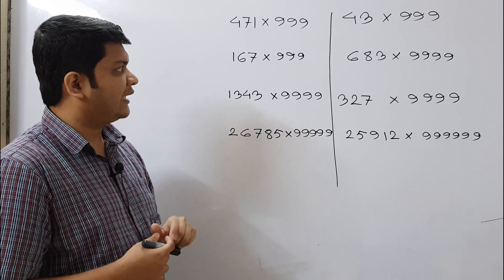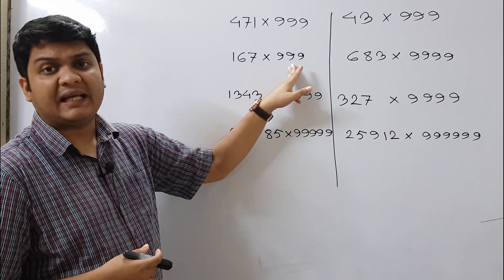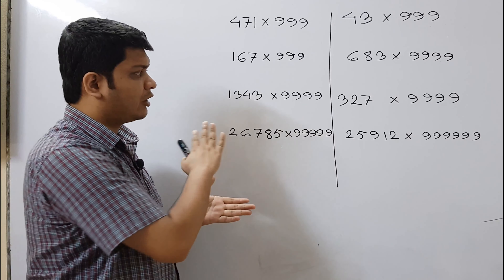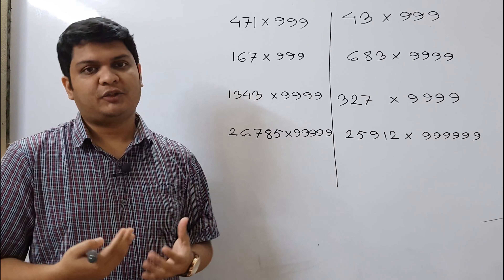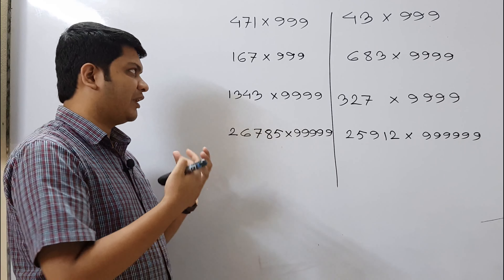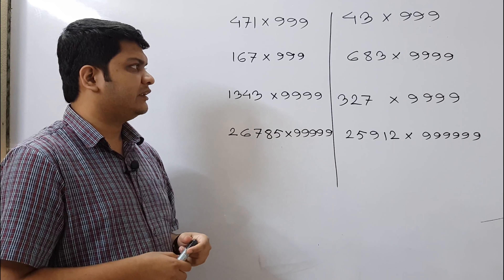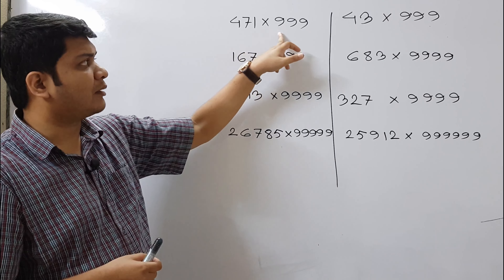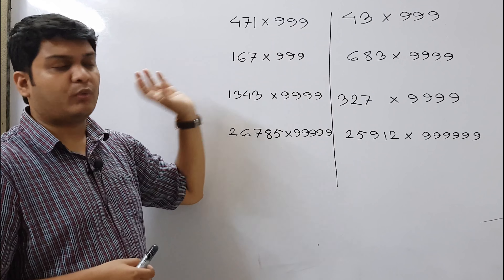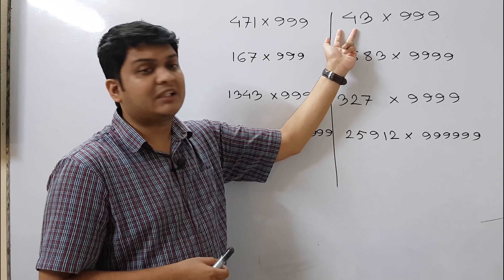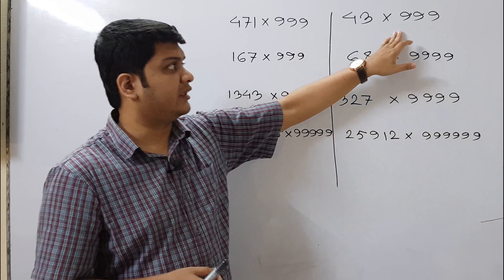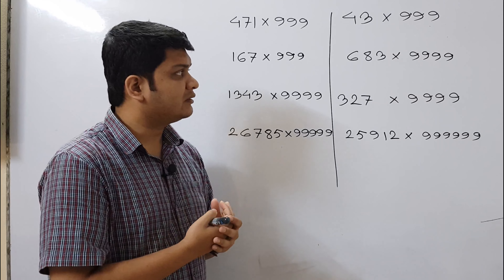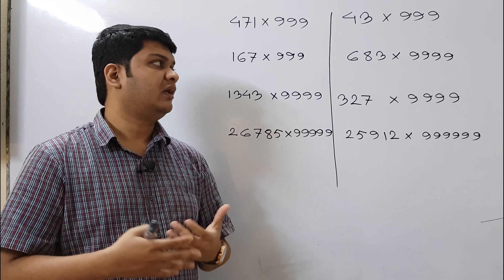As you can see on the board, the multipliers are all 9s. When the digits of the multiplier are all 9s, there is a trick to calculate the product very easily. There will be three cases: Case 1 is when the digits in the multiplicand and the multiplier are the same; Case 2 is when the digits in the multiplicand are less than those in the multiplier; and Case 3 is when the digits in the multiplicand are greater than those in the multiplier.